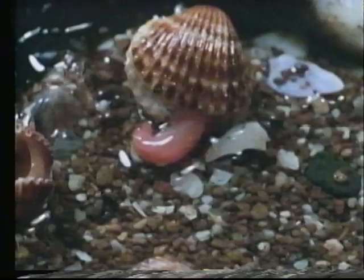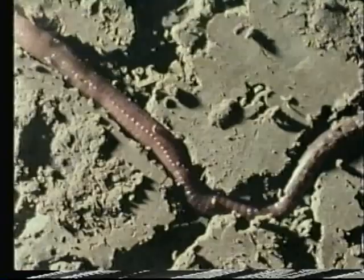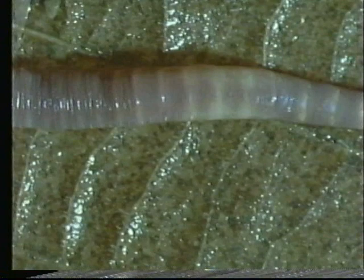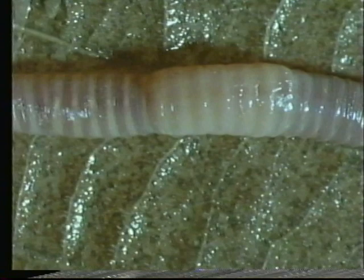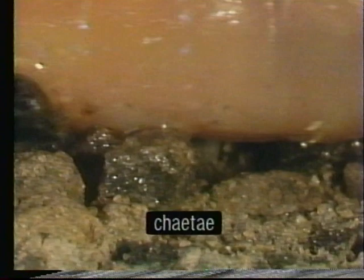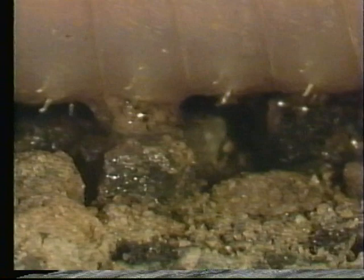Some marine flatworms swim by undulating the whole body. Some molluscs use the muscular foot for burrowing. Annelids have a hydrostatic skeleton. The body of the worm is filled with fluid against which the muscles push. The division of the body into segments gives the worm more control over its movements. Waves of muscle contraction pass along the worm's body. The worm uses bristles, or chaetae, on its ventral surface to anchor parts of its body to the ground while other parts are extended forward. Some annelids use their parapodia for locomotion.